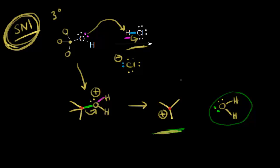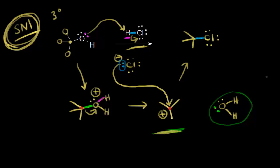In the final step, the nucleophile attacks the electrophile — the chloride anion attacks the carbocation. The electrons in blue form a bond to that carbon in red, giving us tert-butyl chloride, and we lose water in the process. This is a very easy reaction that occurs at room temperature — you can just take tert-butanol, add concentrated hydrochloric acid, shake them together, and form the final product.